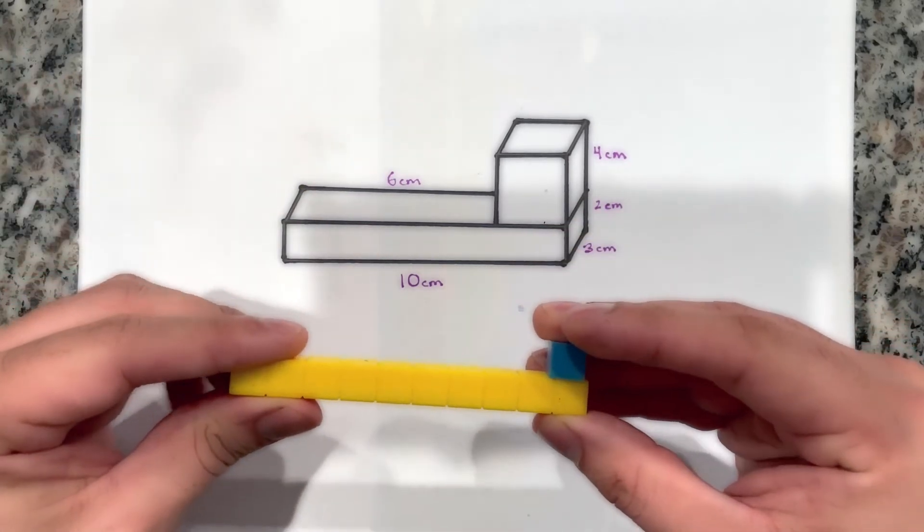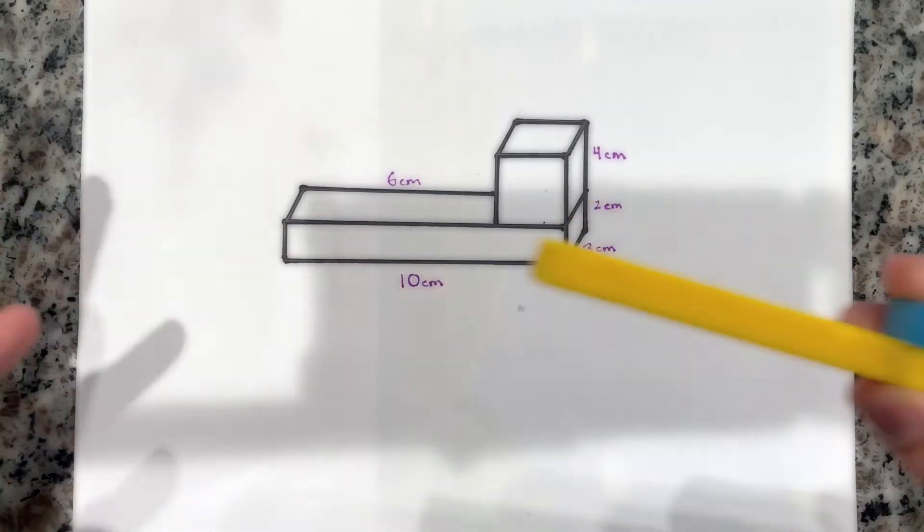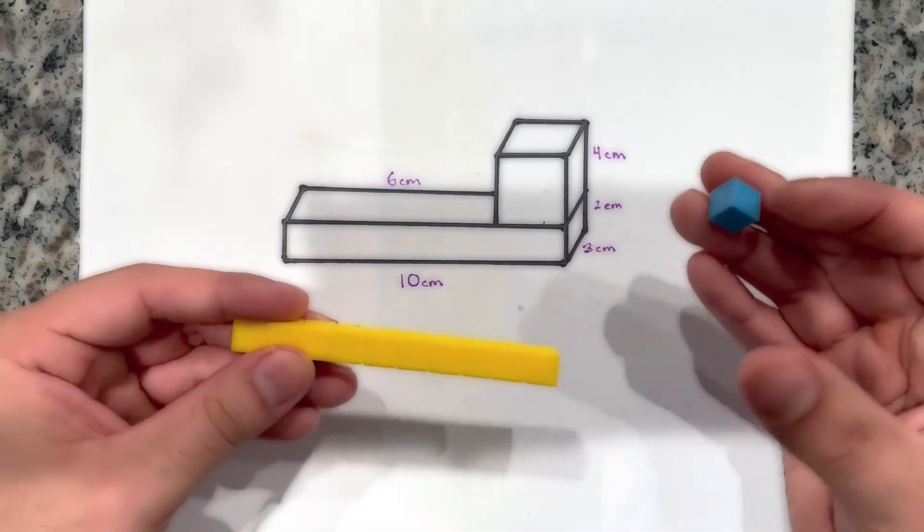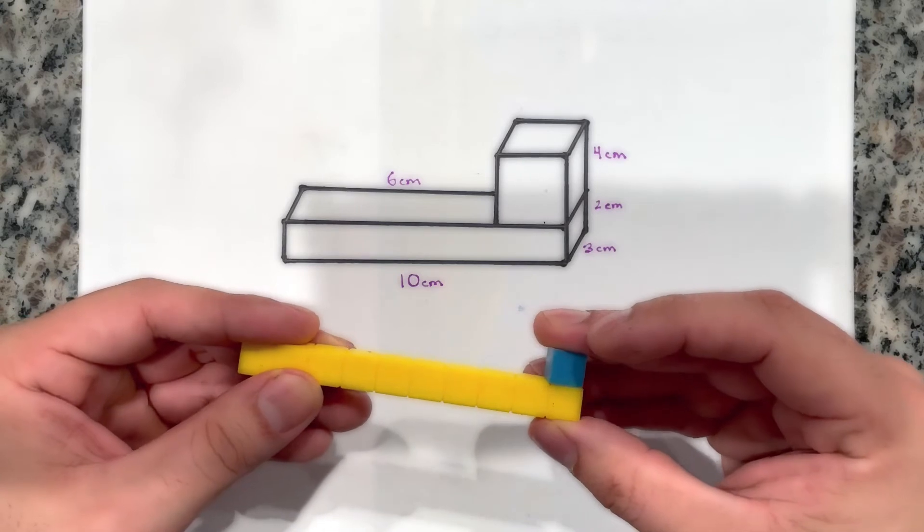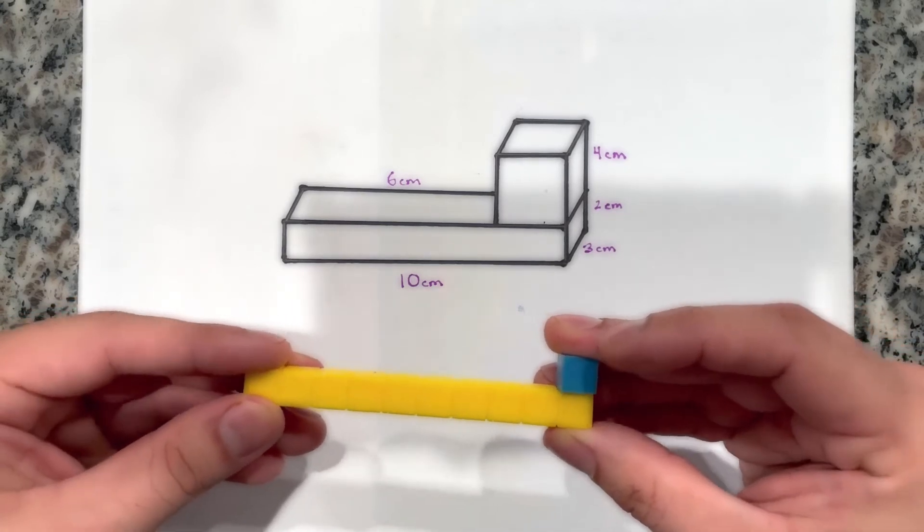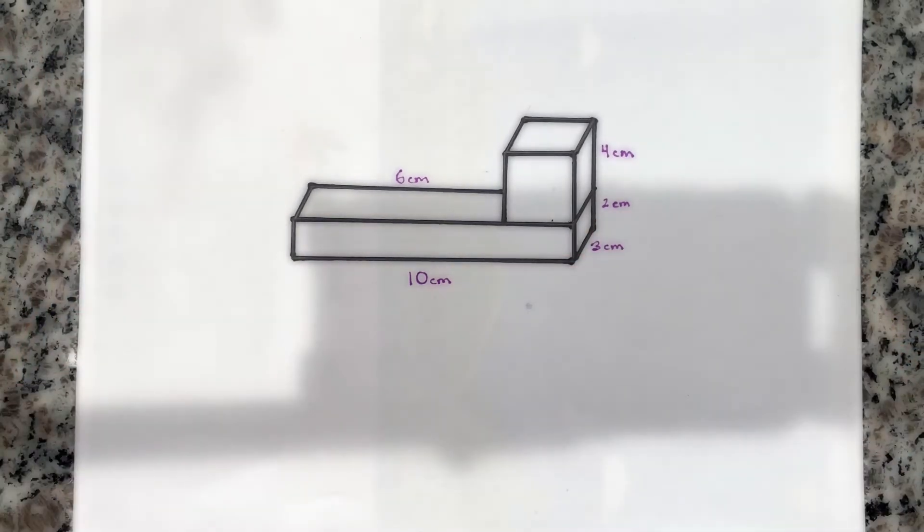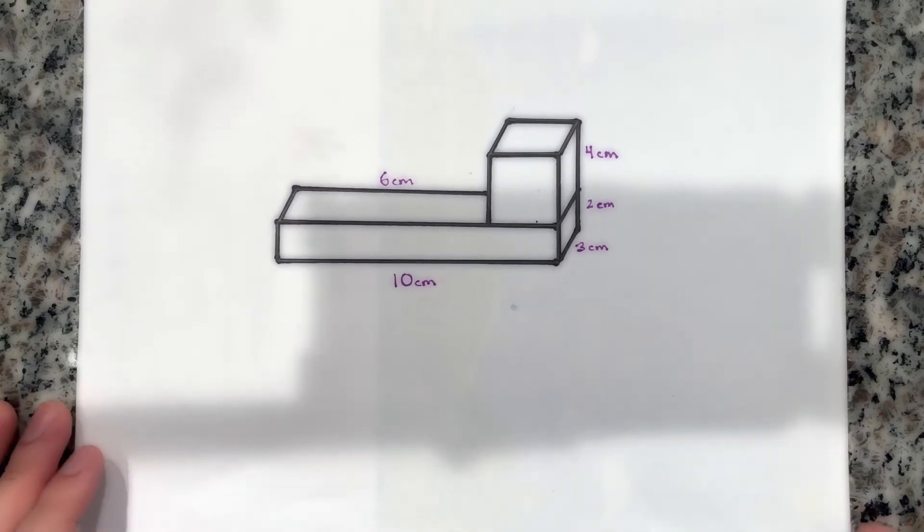Now, I don't know why they have to get all technical with it, but that's basically what it is. It's basically just two shapes put on top of each other, and now it's a composite figure. So now that we got that out of the way, let's talk about how to find the volume of these two.